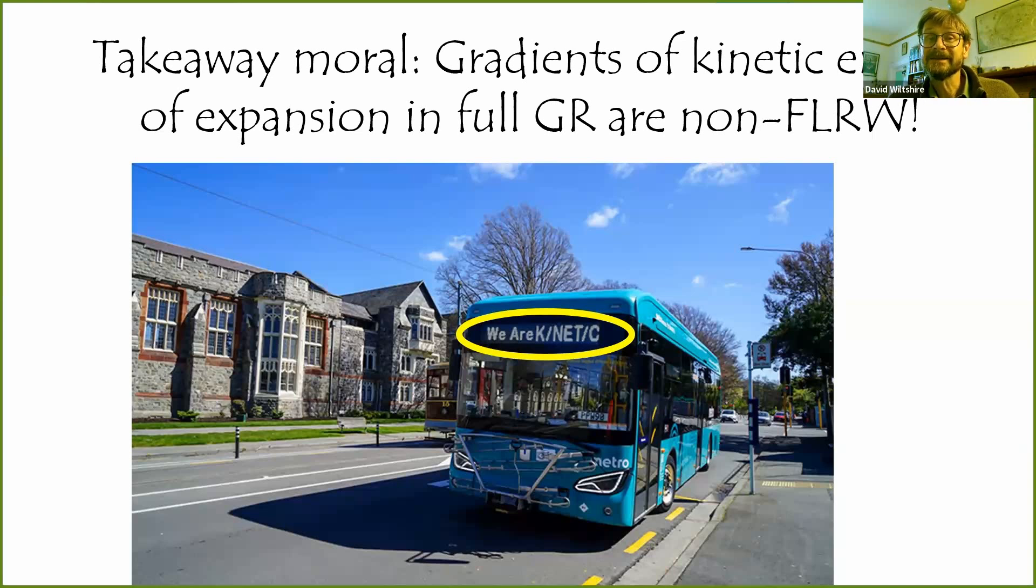Those gradients can generate something which we mistakenly identify as a cosmological constant or as a dark energy of some other nature, which also has to somehow obey Friedman, even though GR doesn't.